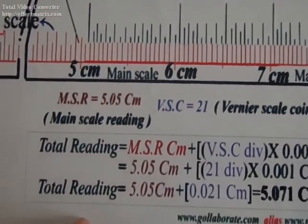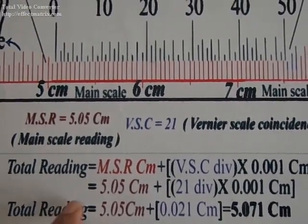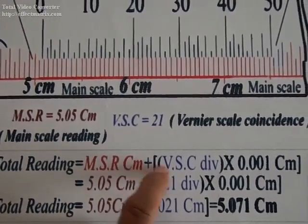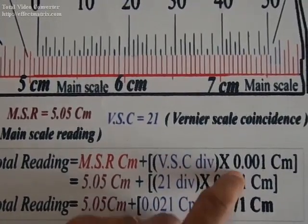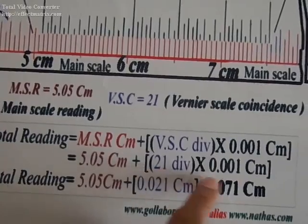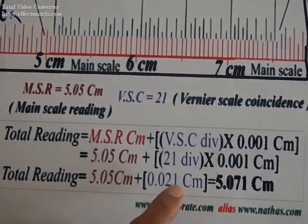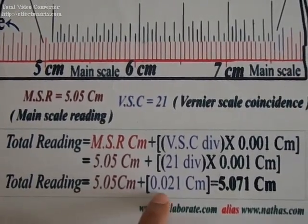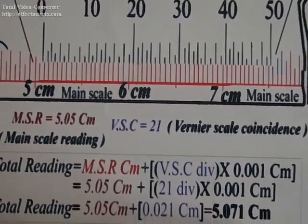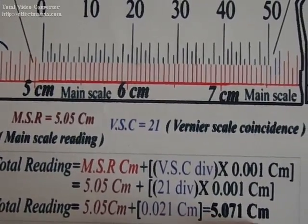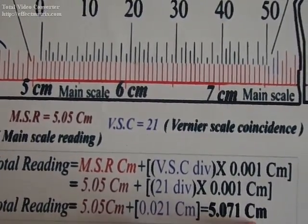While reading, I write it as the main scale reading plus the vernier scale coincidence multiplied by the least count. It comes with the unit 0.001 centimeter. This is to be added with the main scale reading. So the total reading is 5.07 centimeters. When I write in centimeters it comes with three decimal places.